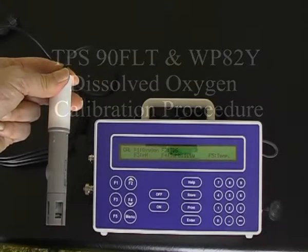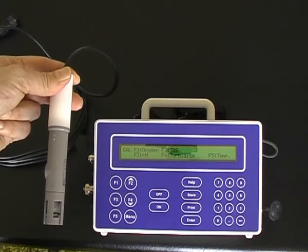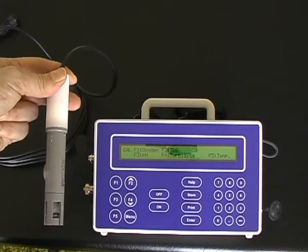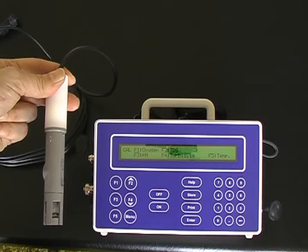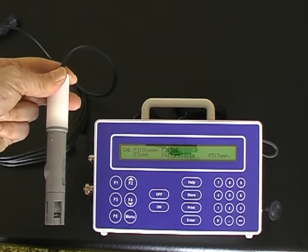Dissolved oxygen sensor calibration requires a two-point calibration: the first point in a sodium sulfite zero solution, and the second point with the dry sensor in air.